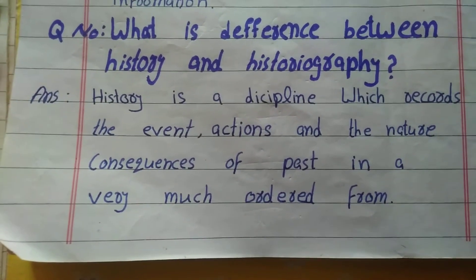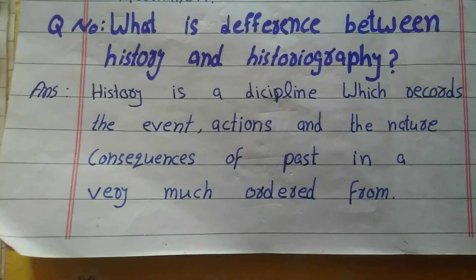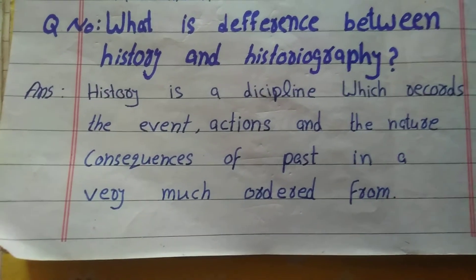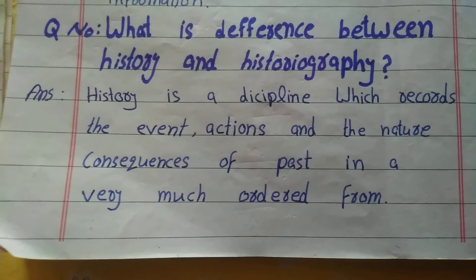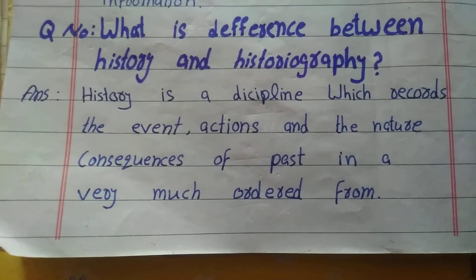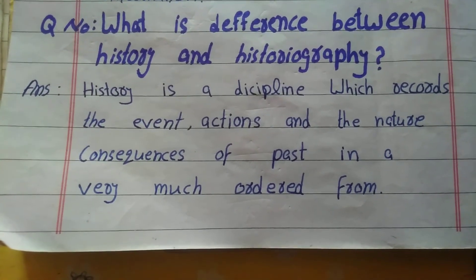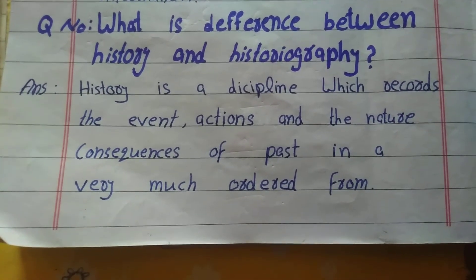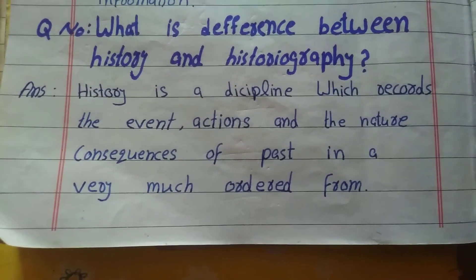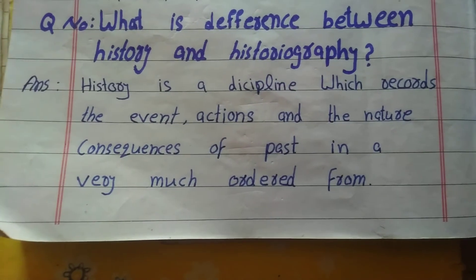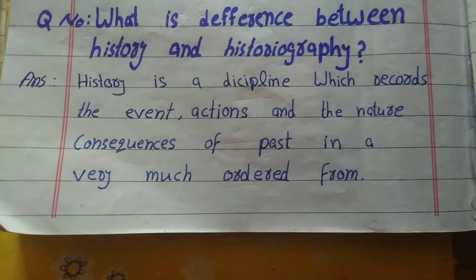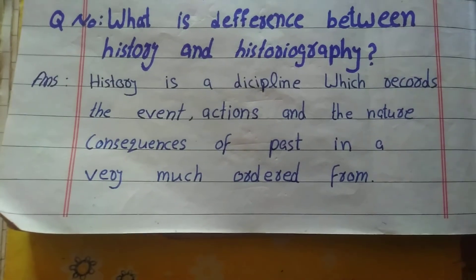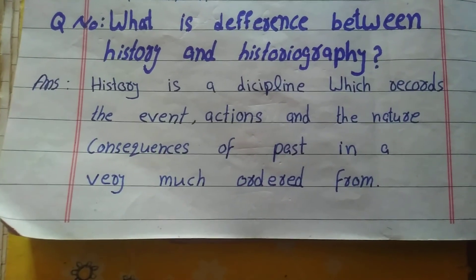What is the difference between history and historiography? History is a discipline which regards the event, action and the nature, concurrence of past in a very much ordered manner. This is the definition of history.